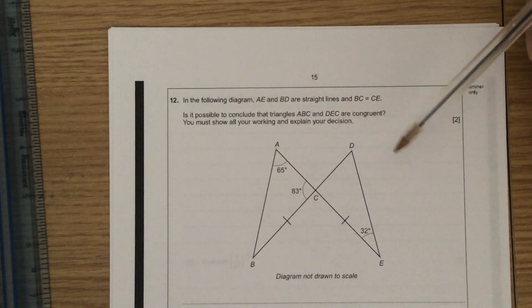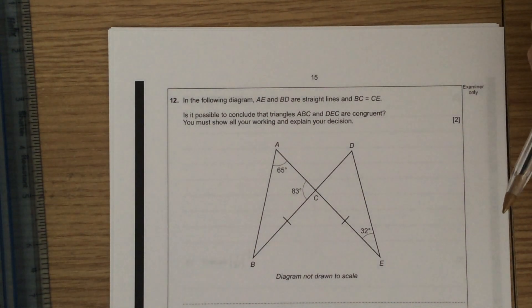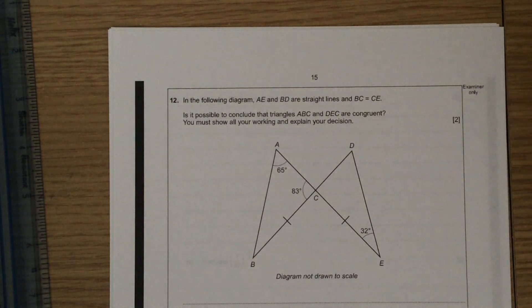Question 12. If I want to prove congruency, I need to find that in both triangles I have a setup of angle, side, angle being the same.